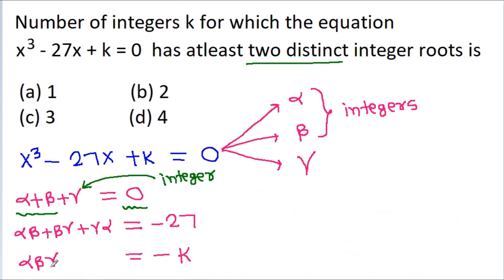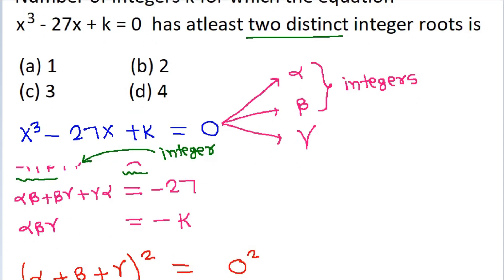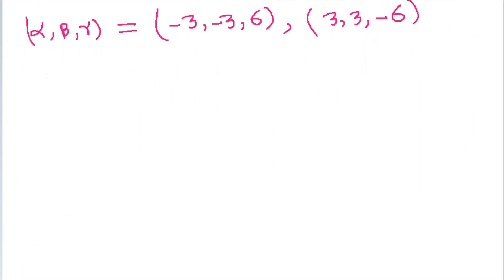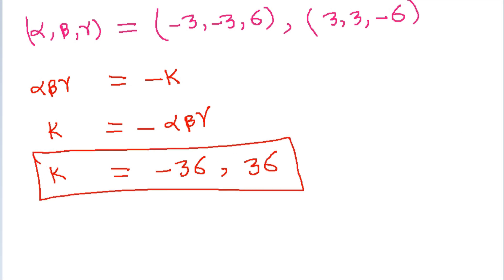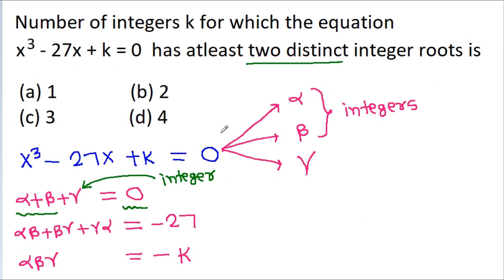We have alpha·beta·gamma = -k, so k = -alpha·beta·gamma. If alpha, beta, gamma = (-3, -3, 6), then alpha·beta·gamma = (-3)(-3)(6) = 54, giving k = -54. Wait — actually computing: k = -((-3)(-3)(6)) = -54... but the video states k = -36 in both cases. Taking (-3)(-3)(6) = 54, k = -54; and (3)(3)(-6) = -54, k = 54. Either way we get 2 distinct values for k. So the correct answer is option B, 2.